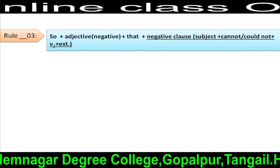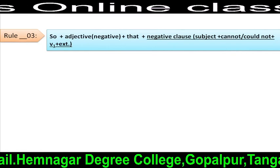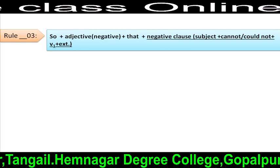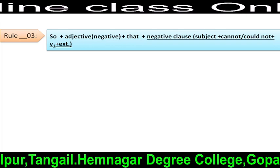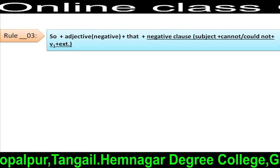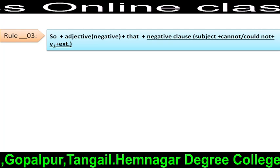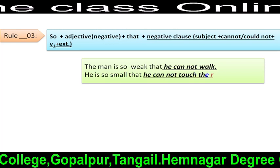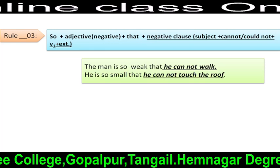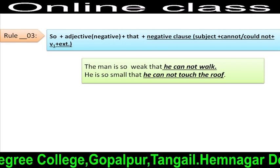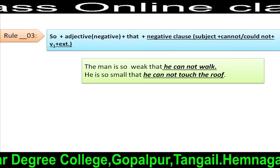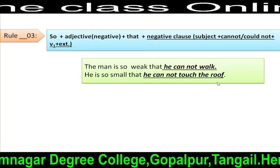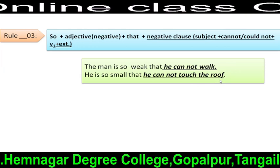Rule 3: So + adjective (negative sense) + that + negative clause. Here, you have to understand what a negative clause is. In a negative clause, we frequently find: subject + cannot/could not + V1 + extension. For example: 'The man is too weak that he cannot walk.' Here, 'he cannot walk' is the negative clause. 'He is so small that he cannot touch the roof.' Here, 'he cannot touch the roof' is the negative clause.